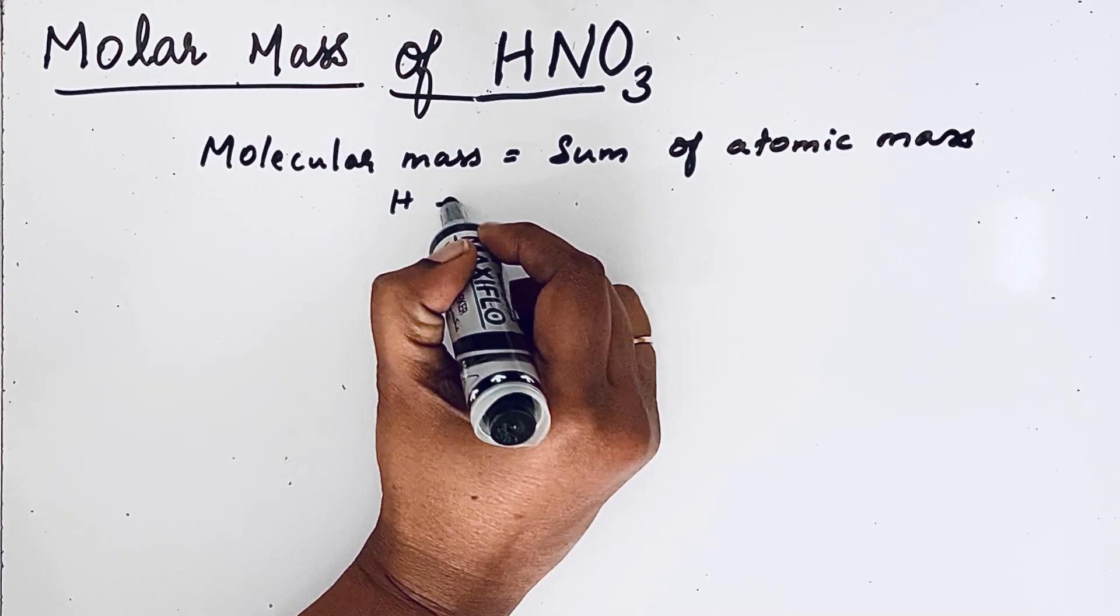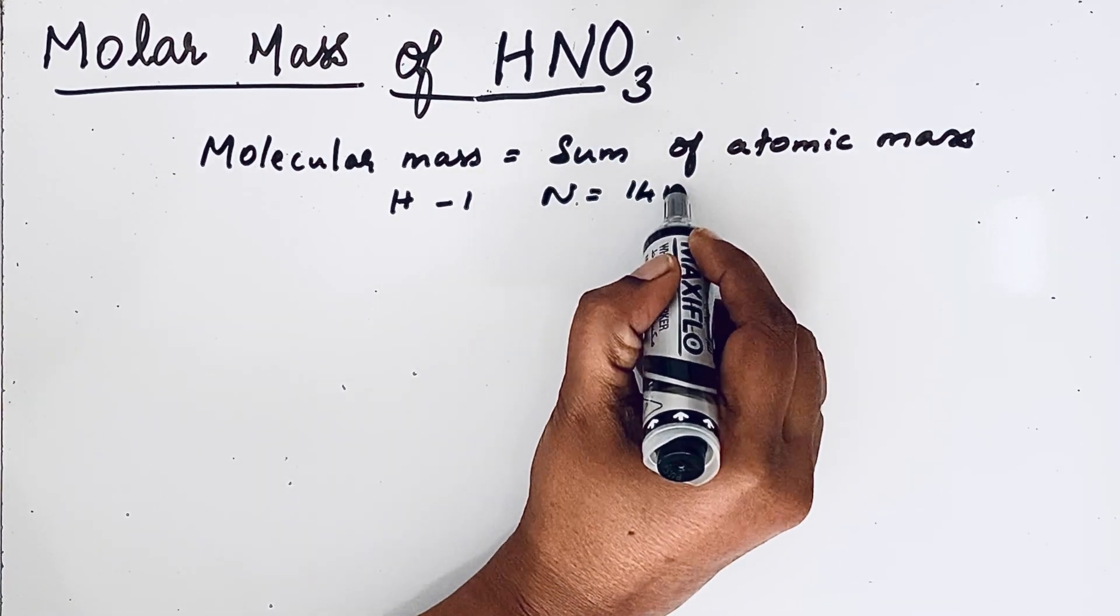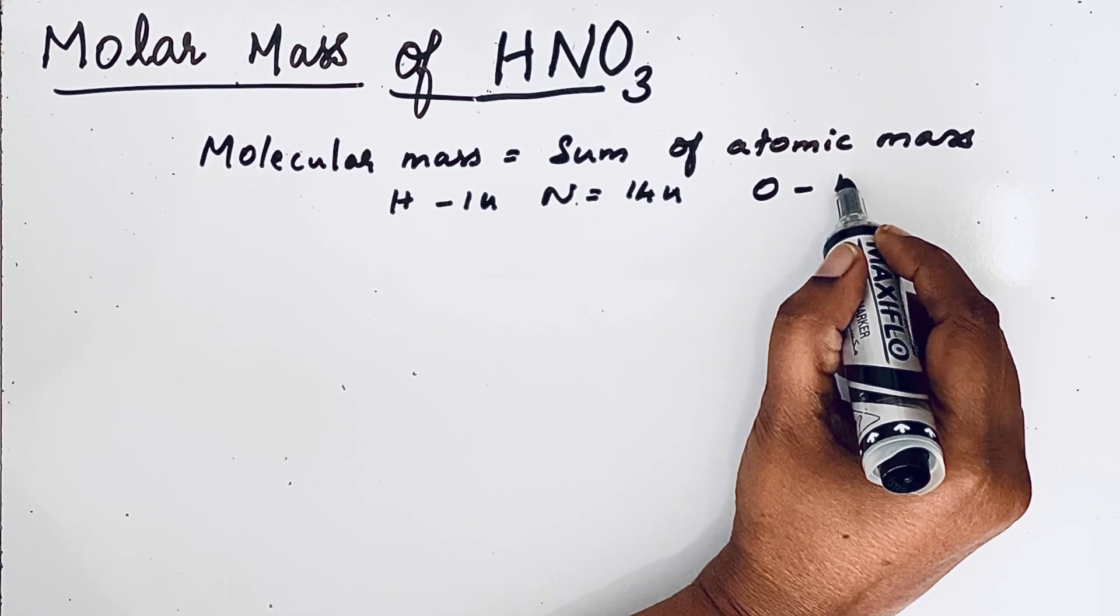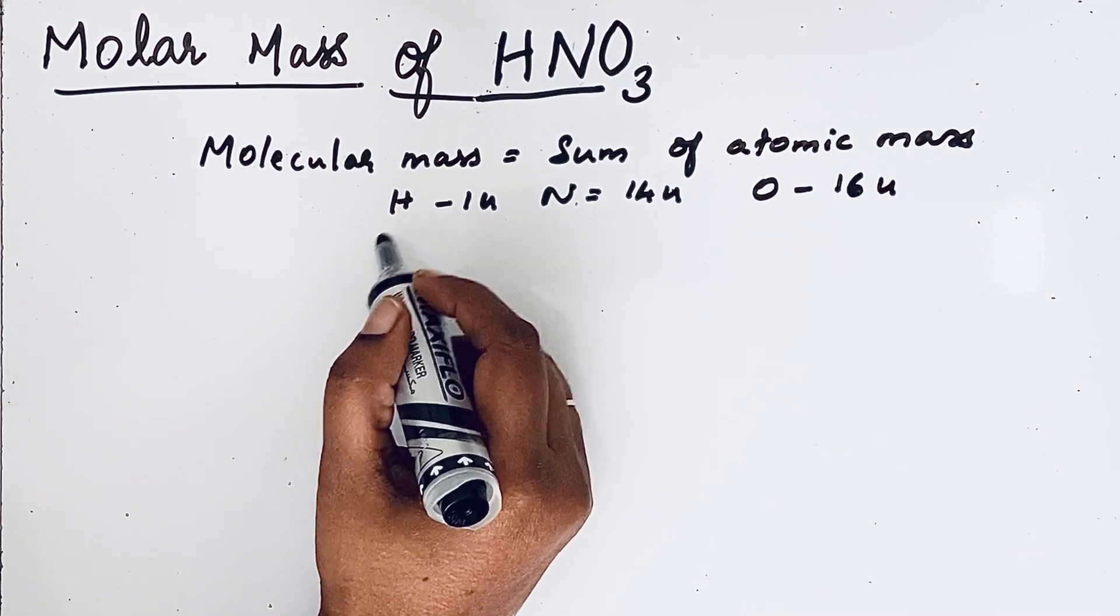Hydrogen atomic mass 1, nitrogen atomic mass 14U, oxygen atomic mass 16U. So, to find the molecular mass,